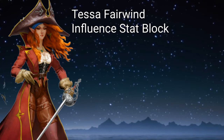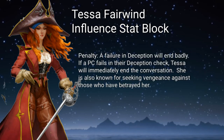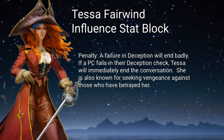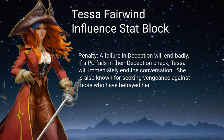Some NPCs might also have a penalty. A penalty occurs when a PC attempts a skill check or other form of influence that backfires. In this example, Tessa Fairwind does not like being deceived — if a PC fails in their Deception check, Tessa will immediately end the conversation. She is also known for seeking vengeance for those who betray her, and this might have future consequences in the campaign.